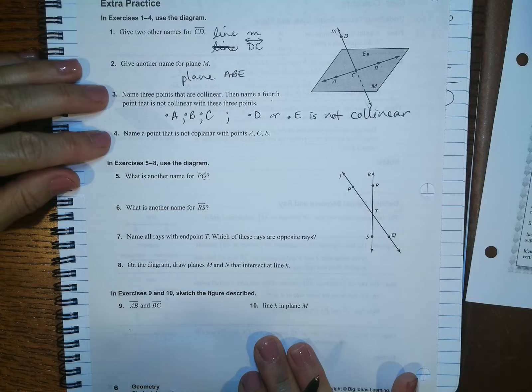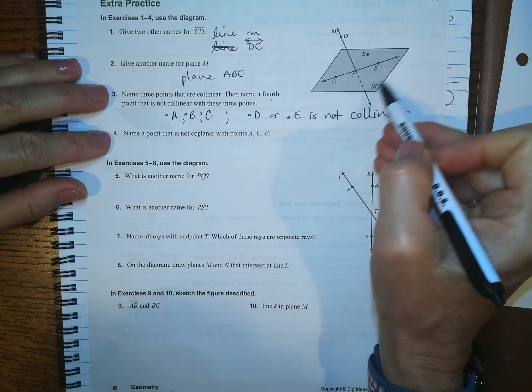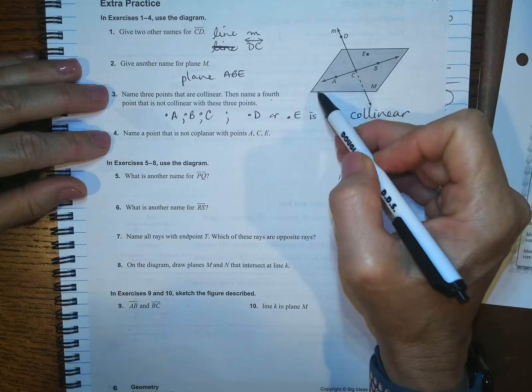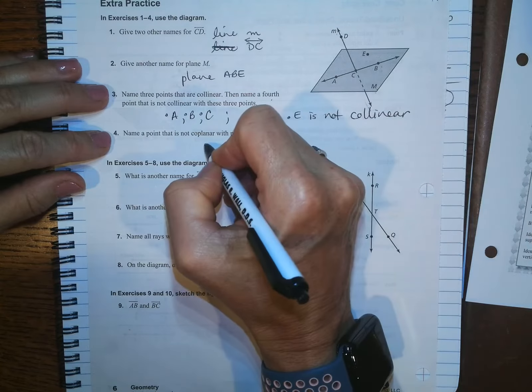Okay. Name a point that is not coplanar with A, C, E. So A, C, and E, these are all inside plane M. The only other point that we have labeled that's not there is D. So this is going to be point D.